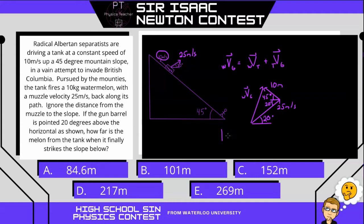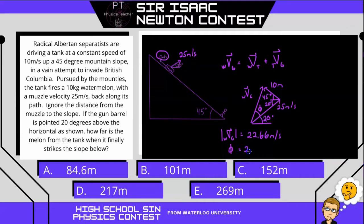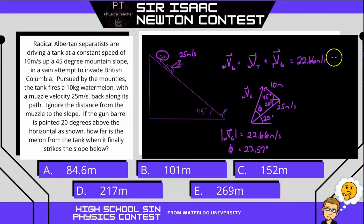If you do that, you'll get the magnitude of the velocity of the watermelon relative to the ground equal to 22.66 meters per second. We also need to know the angle, and that's where you apply the sine law. If you do that, you will get this angle to be 23.57 degrees. Adding it to 20, we get the velocity of the watermelon relative to the ground to be 22.66 meters per second at 43.57 degrees above the horizontal. So now that we know the velocity of the projectile, the next part of the question is going to be a projectile motion question.